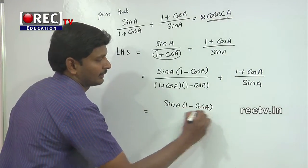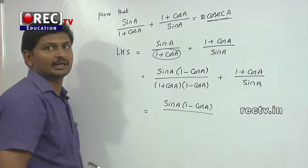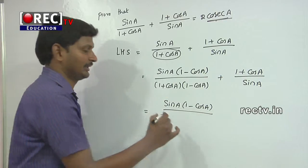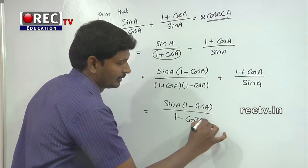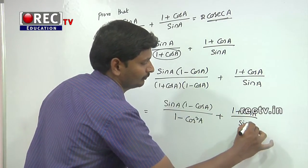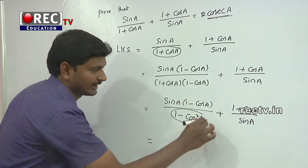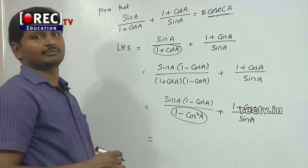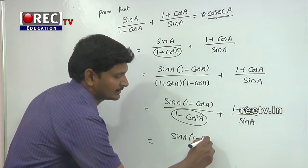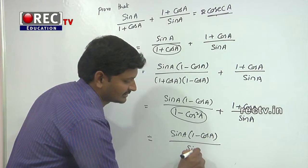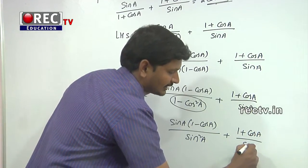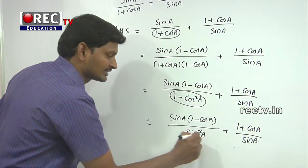Applying the difference of squares formula: (1+cos(a))·(1−cos(a)) = 1−cos²(a). Since 1−cos²(a) = sin²(a) by the Pythagorean identity, the first term becomes sin(a)·(1−cos(a))/sin²(a). The sin(a) in the numerator cancels with one factor of sin(a) in the denominator, leaving (1−cos(a))/sin(a).